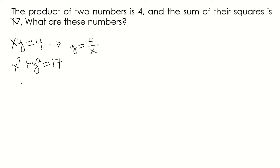So we have x squared plus, substitute y which is 4 over x squared, equals 17. Then x squared plus 4 times 4 is 16 over x squared equals 17.